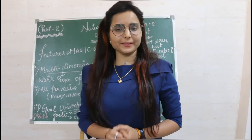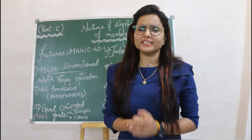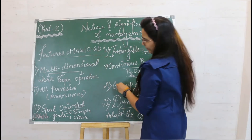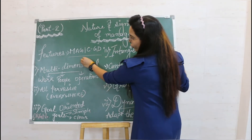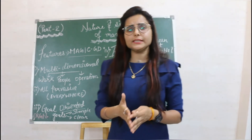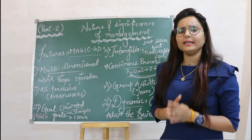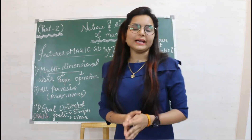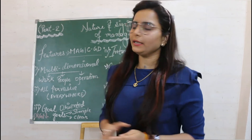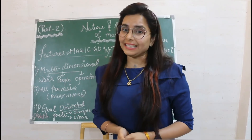Today we have completed features of management. The easiest way to remember them is the mnemonic MAGIC GD — M for multi-dimensional, A for all-pervasive, G for goal-oriented, I for intangible, C for continuous process, G for group activity, D for dynamic. MAGIC GD will help you easily remember the features of management.